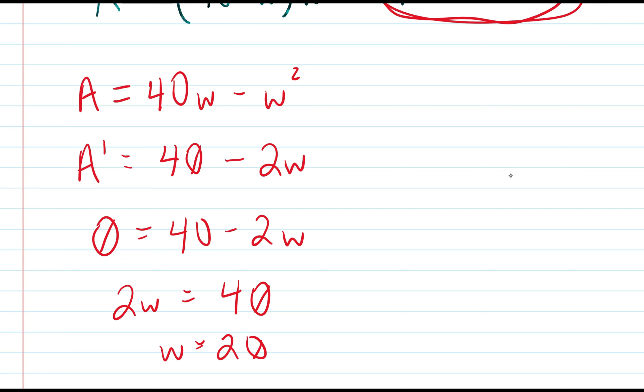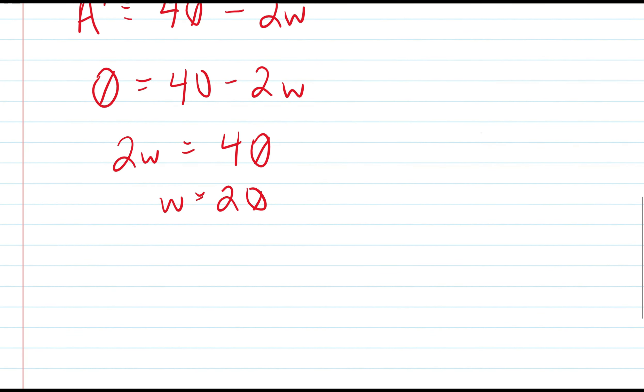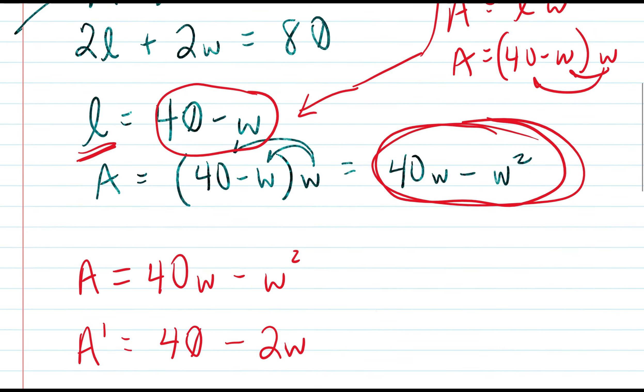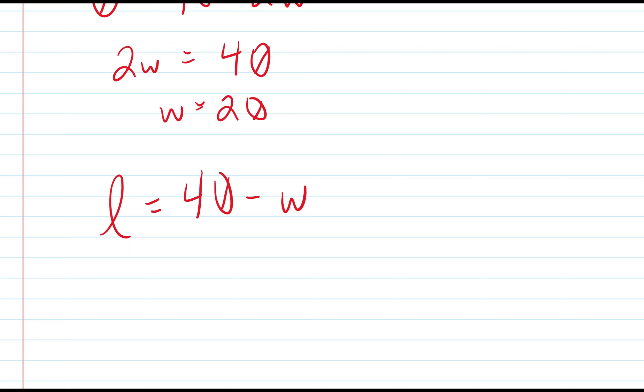If we were to go ahead and use a sign diagram, we would see that there's a maximum at w equals 20. We can solve for l using the equation that we got for the perimeter, that was l equals 40 minus w. You just have l equals 40 minus 20. Then we have l being equal to 20.